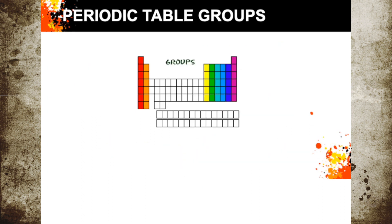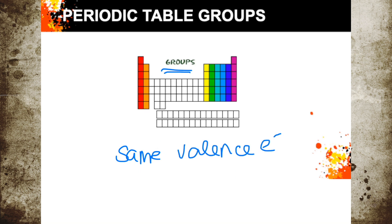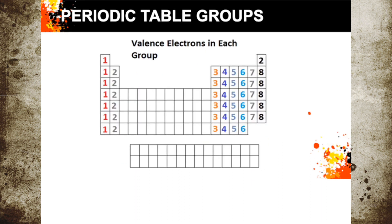The columns on your periodic table are what we call groups. Elements in the same group have similar chemical properties because each group has the same number of valence electrons. So here we have group 1A, followed by 2A, 3A, 4A, 5A, 6A, 7A, and then 8A. The elements in your periodic table are arranged in groups, and each group has the same number of valence electrons.